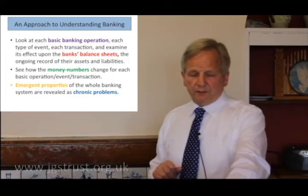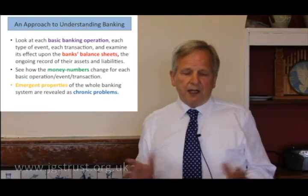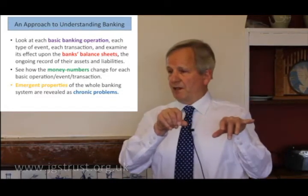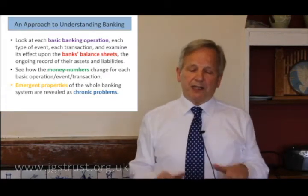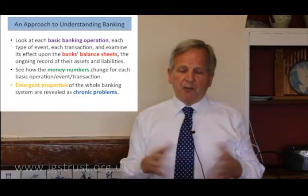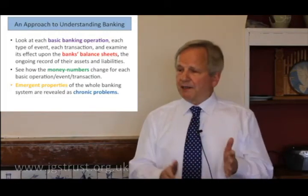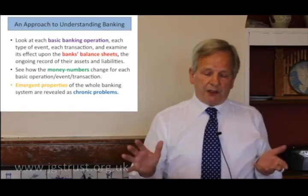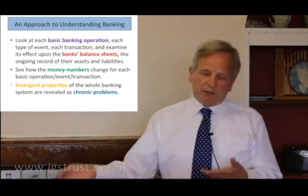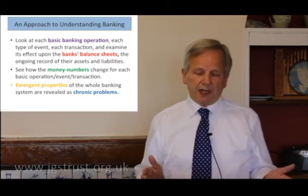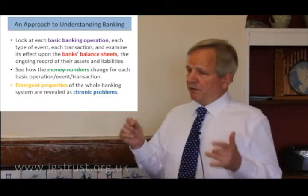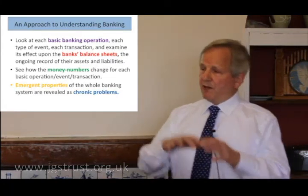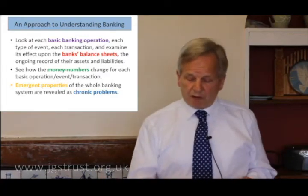We look at what's called the bank's balance sheets. What is a balance sheet? It's just an accounting convention where you list on one side all the assets of an entity and on the other side all its liabilities. Double-entry bookkeeping is a way of maintaining exact balance between these two sides. So we see how these money numbers change for each basic operation: putting money in, taking it out, moving it from one account to another. And from this bottom-up approach — going from the particular to the general, from the detail to the more global picture — emergent properties of the whole system are revealed as chronic problems.